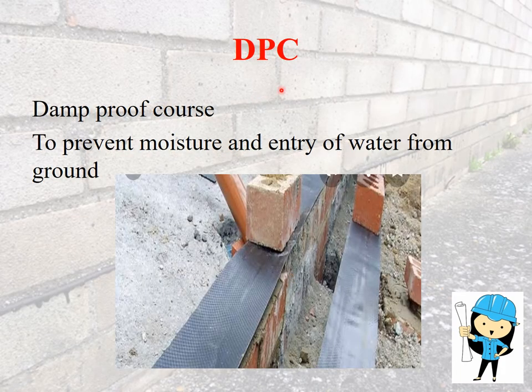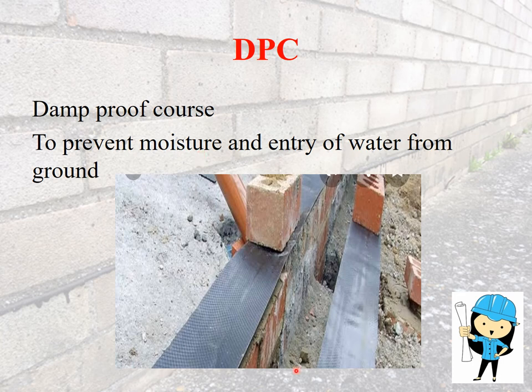Now we are going to see about what is meant by DPC. DPC is the damp proof course. It is used to prevent the entry of moisture and water from the ground surface or from the environment and surroundings. We can use it as a sealant also. There are many kinds of damp proof materials such as geomembranes, geopolitan, and polythene sheets. According to the site condition we can change the materials and choose which damp proof DPC should be used.